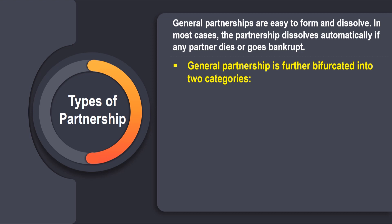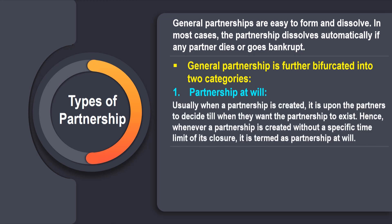General partnerships are further bifurcated into two categories. The first is partnership at will — whenever a partnership is created without a specific time limit for its closure, it is termed as partnership at will, as it is upon the partners to decide till when they want to continue.